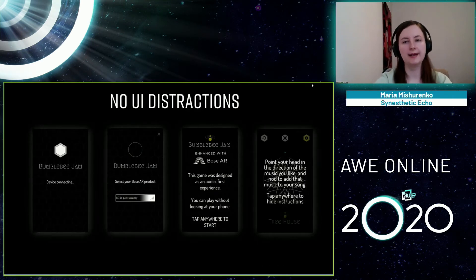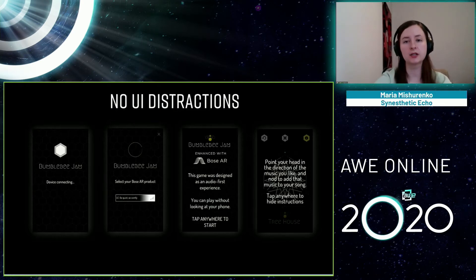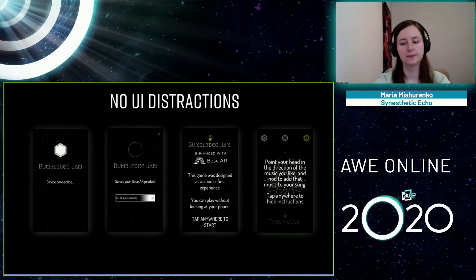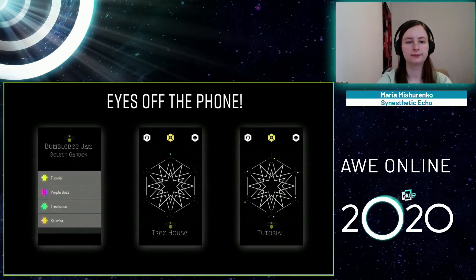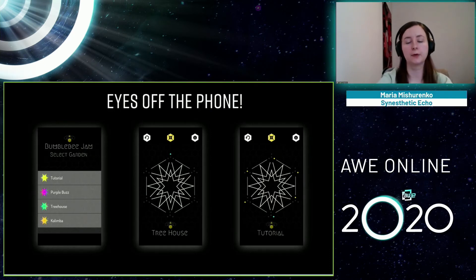Regarding UI — Bose was very specific that they wanted it to be audio-first. That means the screen shouldn't present any distractions; users shouldn't be looking at the screen all the time. But it's also a very novel design paradigm, so some information should be present, at least at the beginning. We iterated a lot on these screens. Basically there's a selection screen on the left and the main screen in the middle. The yellow icon is for re-centering if you don't want to double tap.